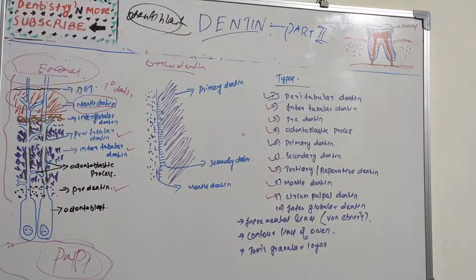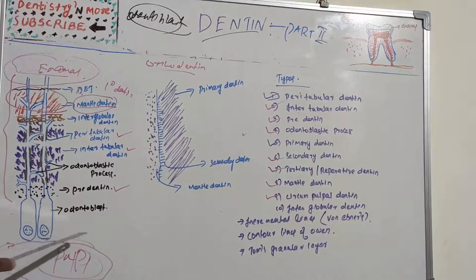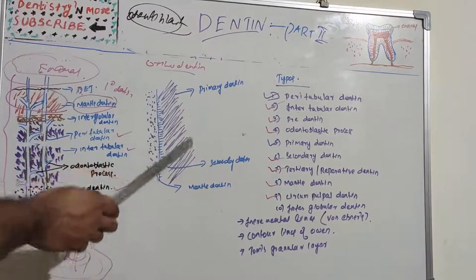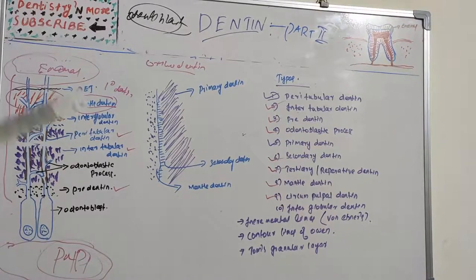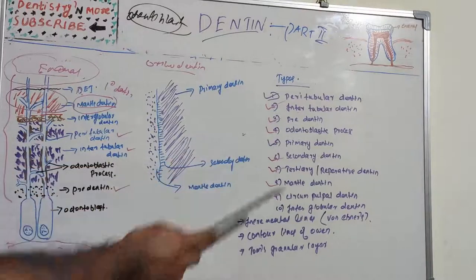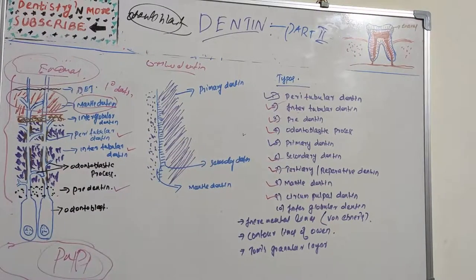Secondary dentine is formed after root completion. It is a narrow band of dentine bordering the pulp that contains fewer tubules than primary dentine. There is usually a bend in the tubules at the interface between primary and secondary dentine, because the odontoblasts slightly change direction after eruption, contributing to the bending of the dentinal tubules.